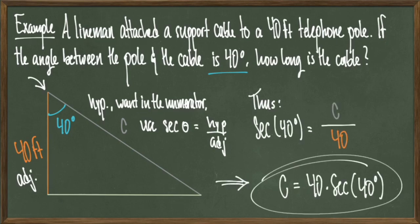Therefore when we solve for c, we see that c is equal to 40 times secant of 40 degrees, which is our final answer. Normally you would need a calculator to figure out what secant of 40 degrees is, but in general, this is an acceptable answer.